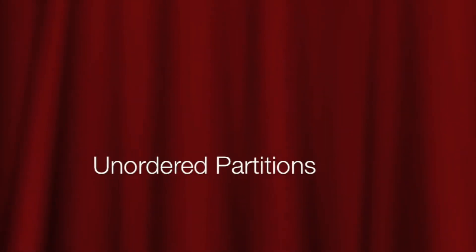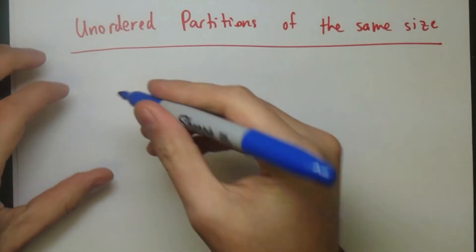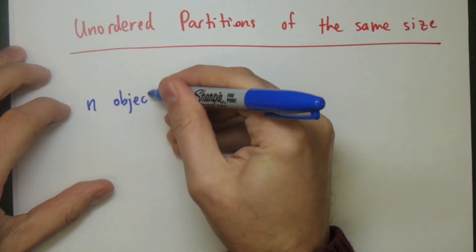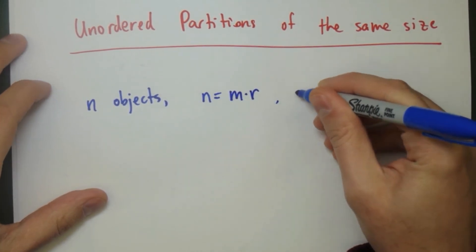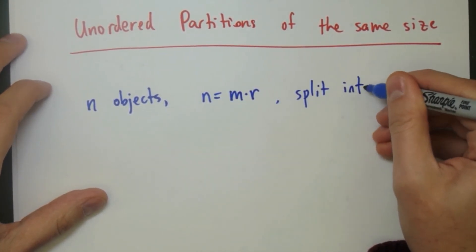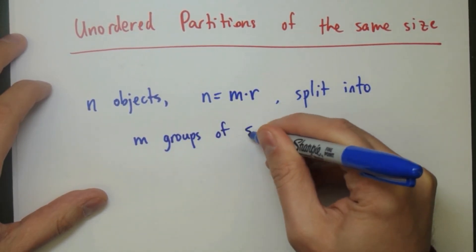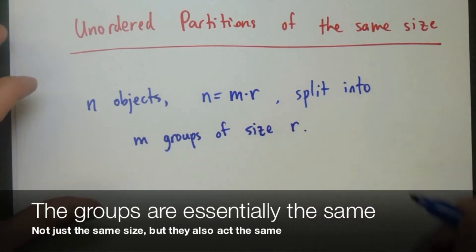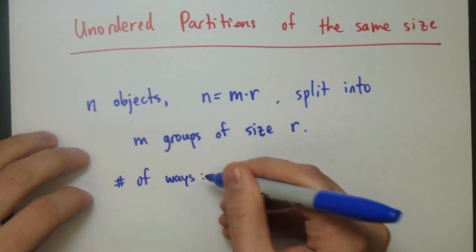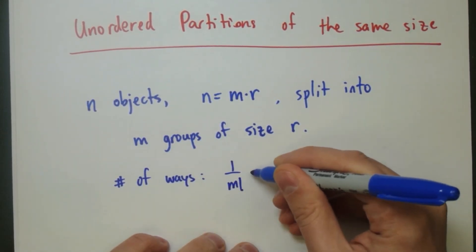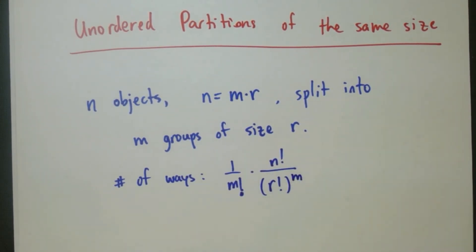An unordered partition is a partition where the groups themselves are essentially the same. These are a bit tougher to deal with, so we're only going to look at unordered partitions where the groups are the same size. We have n objects where n equals m times r, and we split the objects into m groups each of size r. The groups are all the same size and look the same as each other. The number of ways to do this is 1 over m factorial times n factorial over r factorial, raised to the m power.